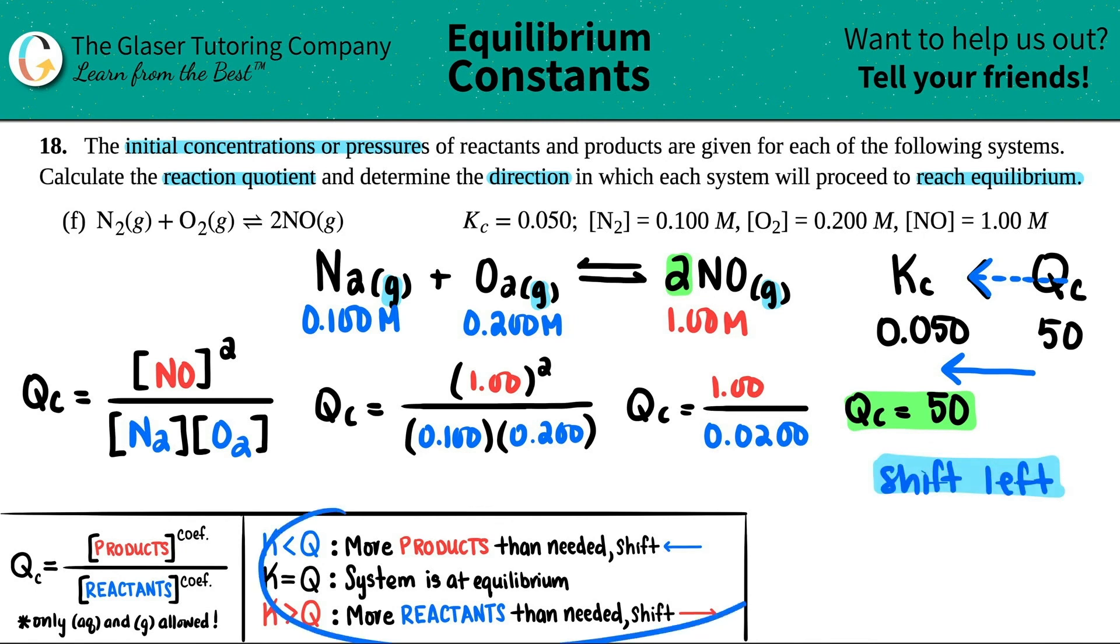You can also see it down here. If the KC is less than the Q, that means that you have way more products than you need. You got to get rid of the products. So you shift in the reverse direction.